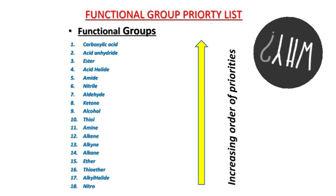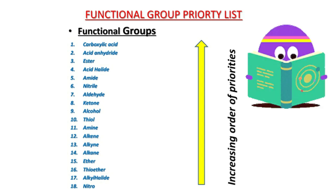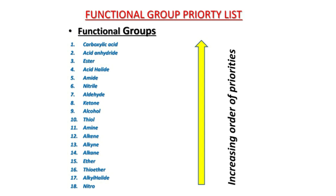As usual, what we do is save you from the headache of memorization. This video is simply to help you memorize the functional groups in the order in which they occur — the ones which are most ranked and the ones which are least ranked — so that when you have a clash of different functional groups, you can tell which one will bear the parent name, irrespective of the number of functional groups mixing in that compound. Now we can dive into the main part: the mnemonics.